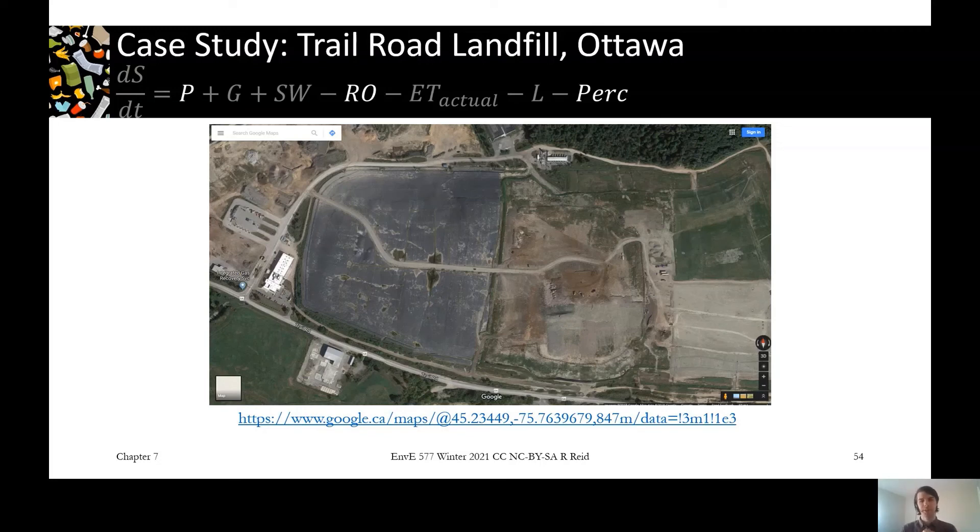But the story with the Trail Road landfill is it had groundwater contamination issues. It was one of these old landfills that didn't have any liner system put in underneath the landfill, so that's really hard to do anything about years later, right? You can't get back underneath the landfill to manage that water coming out of the landfill.